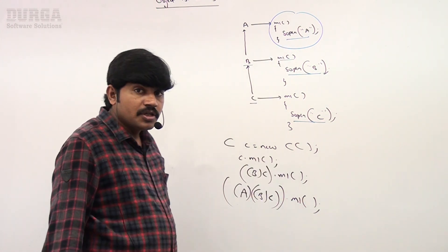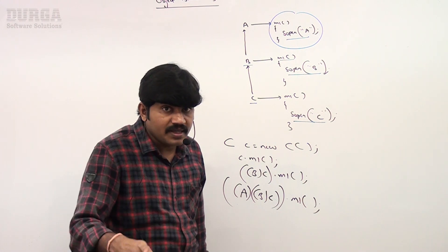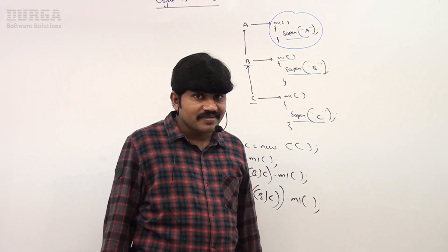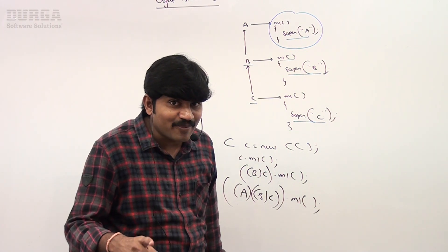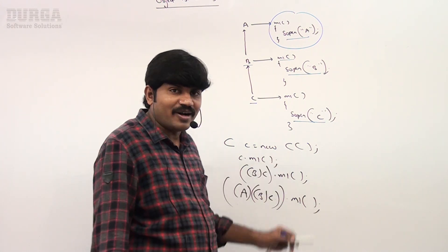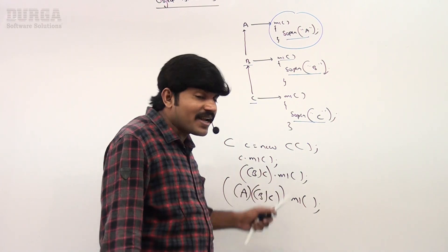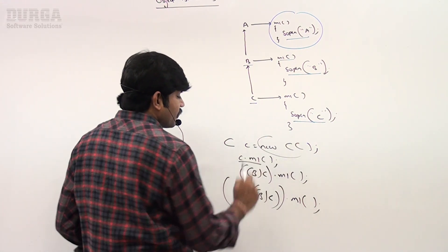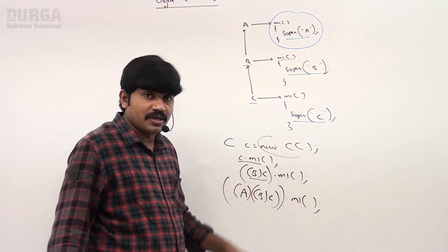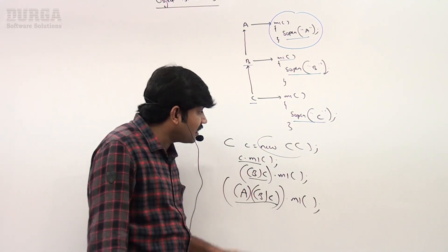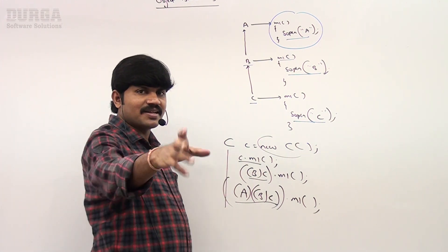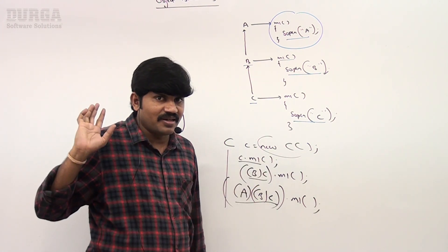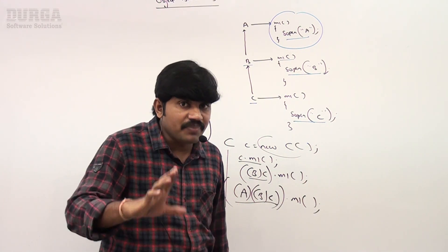In overriding, method resolution is always taken care of by the JVM based on the runtime object — not by the compiler based on reference type (that's overloading). So here the runtime object is C type. Even if you perform typecasting to B or A type, the runtime object is always C. That is why the C class method gets the chance in all cases.